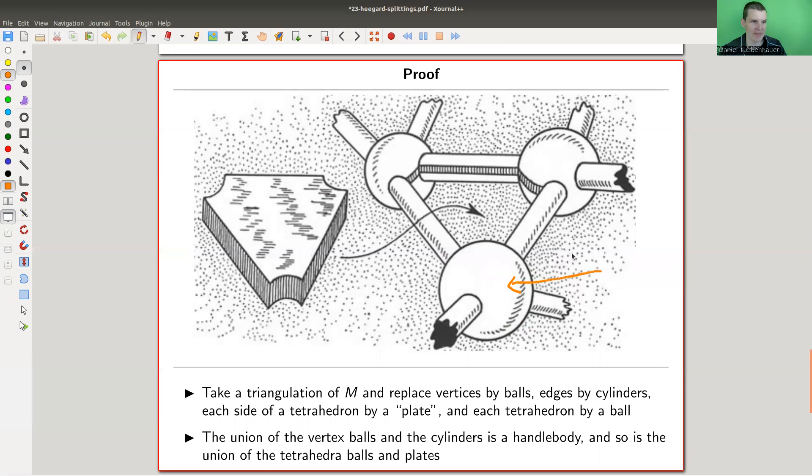So if you have a triangulation of your three manifold, then you replace the vertices by balls, the edges by cylinders. So vertices, edges, and the sides of the tetrahedron by those little plates type things. And the tetrahedron itself, you just glue it in. And if you think about this carefully, then the union of the vertex balls and the cylinders is a handle body. And so is the union of the tetrahedron, the tetrahedron balls and the plates. And that's exactly the Heegaard splitting of the whole picture.